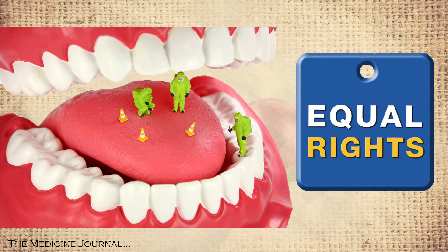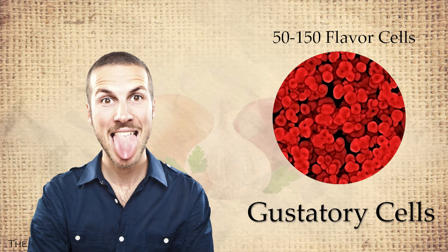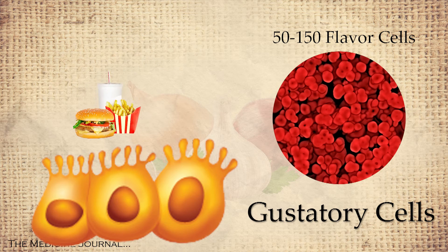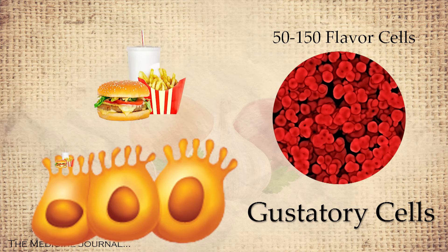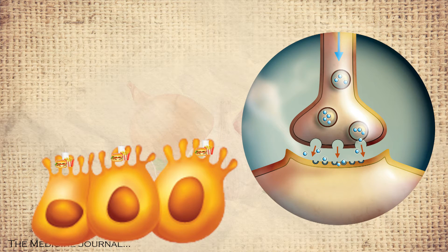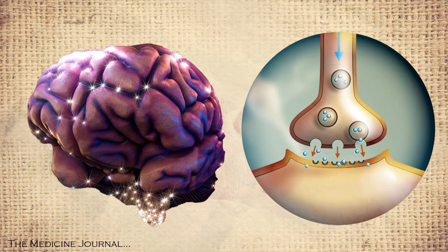All taste buds have the potential for producing the different flavors. Taste buds are a grouping of around 50 to 150 flavor cells, known as gustatory cells. Your gustatory cells contain hairs that have proteins on them. Those proteins react to the chemicals in our food and drink to bind them to the cell. These cells have neuron-like properties that can cause the release of neurotransmitters, which are perceived by the brain as flavor.